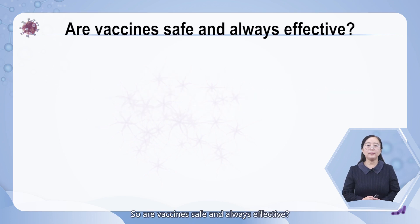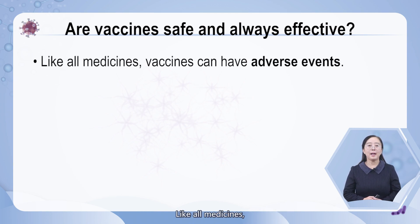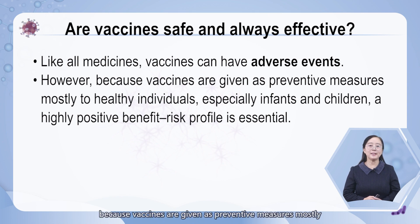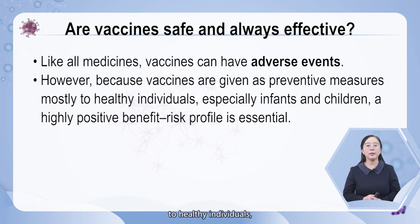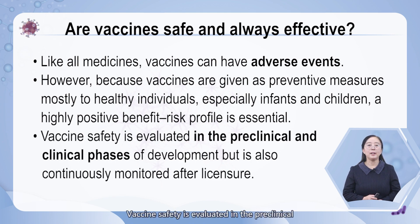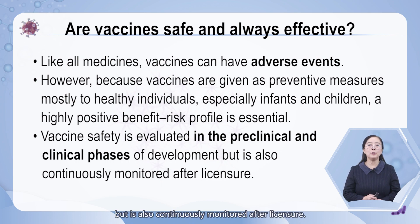Are vaccines safe and always effective? Like all medicines, vaccines can have adverse events. However, because vaccines are given as preventive measures mostly to healthy individuals, especially infants and children, a highly positive benefit-risk profile is essential. Vaccine safety is evaluated in the preclinical and clinical phase of development, but is also continuously monitored after licensure.